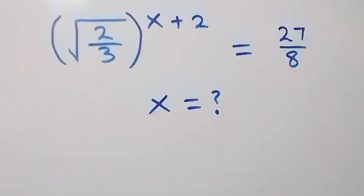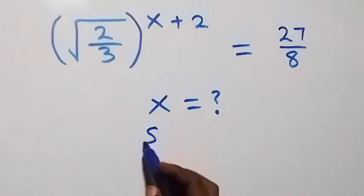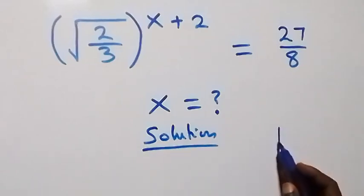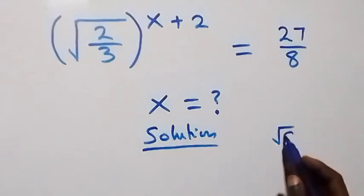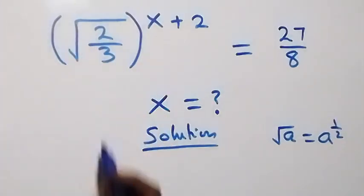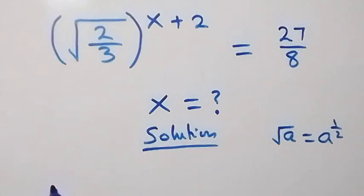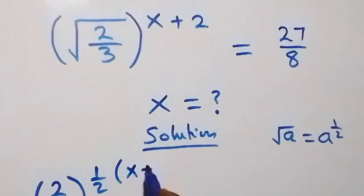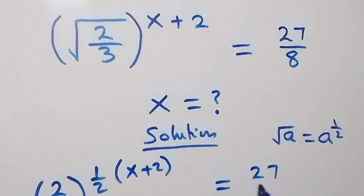Hello, you are welcome. How to solve this nice algebra problem. When we apply the law of indices, root a can be written as a raised to power half. Here the square root can be written as raised to power half, and we have 2 over 3 raised to power half, which is raised to power x plus 2, equals to 27 over 8.